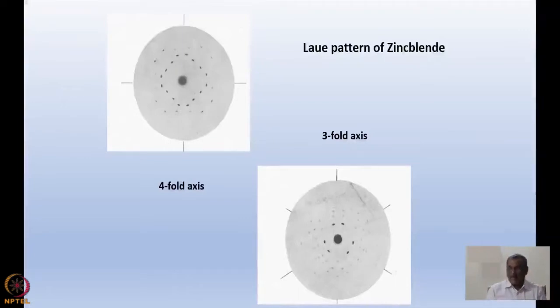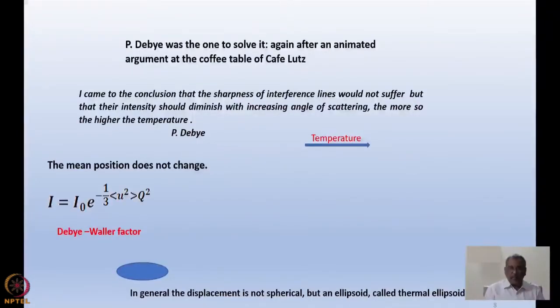It was established that even at a finite temperature, at that time whatever was the room temperature in the experimental hall, Laue pattern or the diffraction patterns do appear. They don't disappear because the thermal effect will make the place or position of the atoms uncertain and kill the periodicity. Debye was one to solve it, again after an animated argument at a coffee table in a cafe called Cafe Lutz.